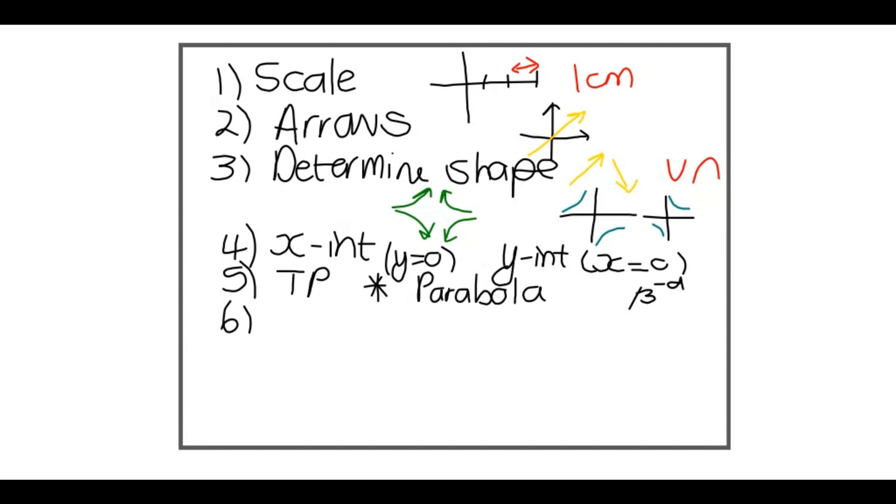The sixth thing you need to look at is the horizontal asymptote. If I have a Cartesian plane here like this, and I'm looking for the horizontal asymptote, it is a horizontal line, y equals something. And our function can never touch that asymptote.